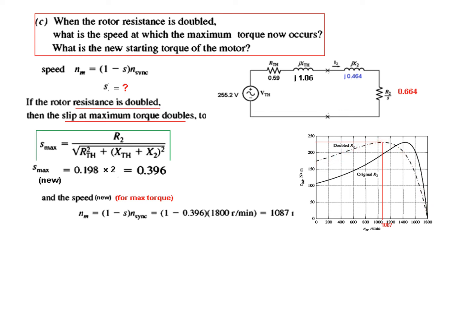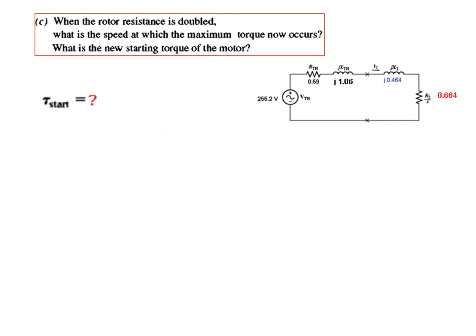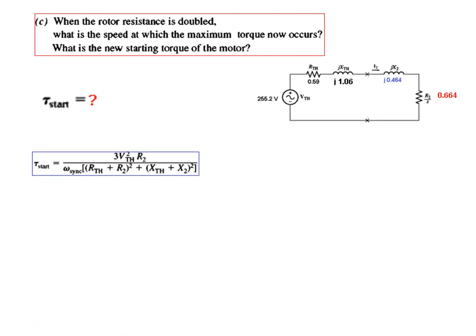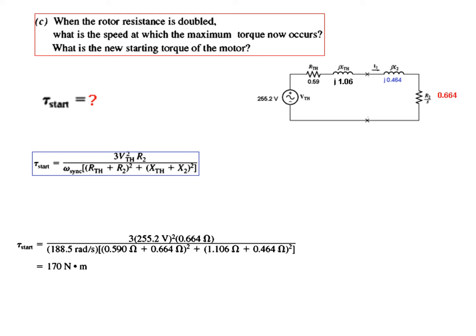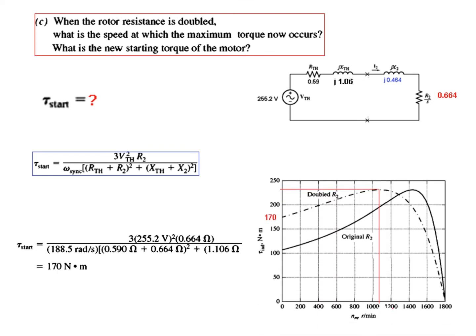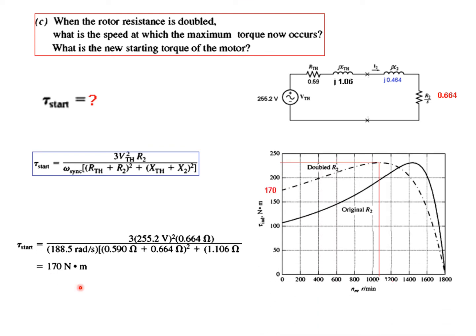We can confirm from the torque-speed graph that at maximum torque, the speed is now 1087 RPM with doubled R2. For the starting torque with doubled resistance, plugging R2 = 0.664 into the starting torque formula gives 170 Newton-meters. From the graph for double R2, the starting torque is 170 N·m when speed is zero.